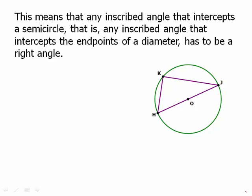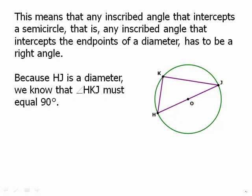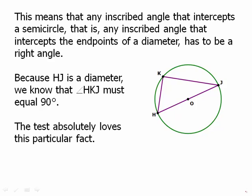This means that any inscribed angle that intersects a semicircle — that is, any inscribed angle that intersects the endpoints of a diameter — has to be a right angle. Because HG is a diameter, the arc is a semicircle, a 180-degree arc. The angle HKJ intersects that arc, so it has to be half of 180 degrees, which is 90 degrees. So at K, we have a 90-degree angle. The test absolutely loves this fact because once you have a right triangle, you can use the Pythagorean theorem and all kinds of ratios.